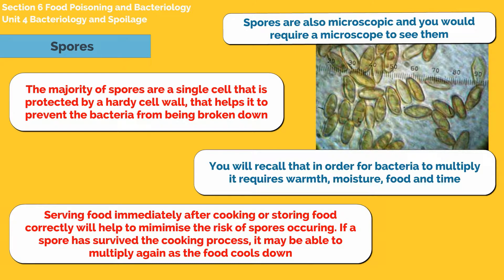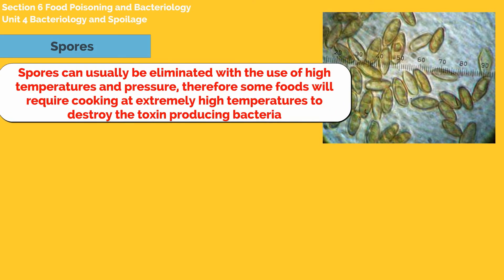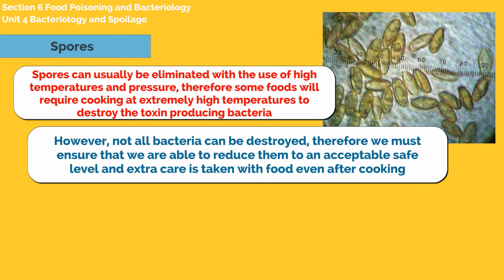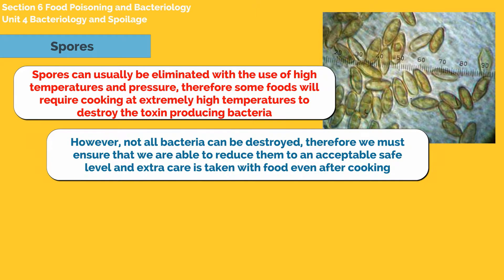Serving food immediately after cooking or storing food correctly will help to minimize the risk of spores occurring. If a spore has survived the cooking process, it may be able to multiply again as the food cools down. Spores can usually be eliminated with the use of high temperatures and pressure. Therefore, some foods will require cooking at extremely high temperatures to destroy the toxin-producing bacteria. However, not all bacteria can be destroyed.